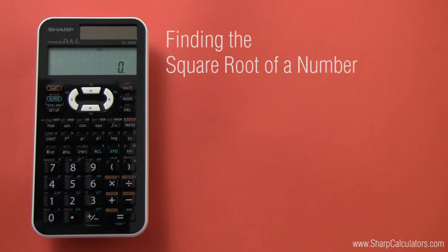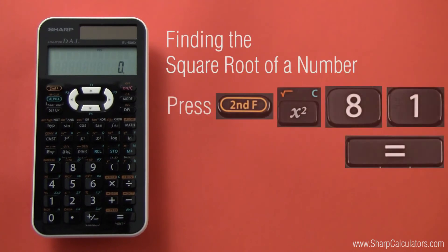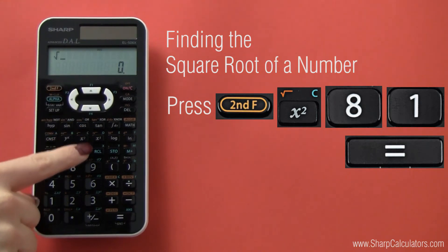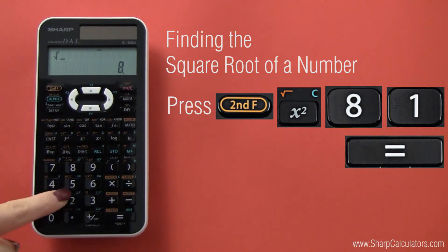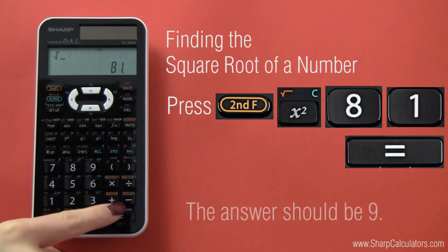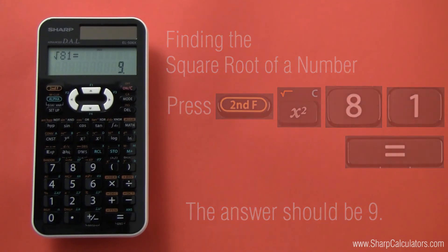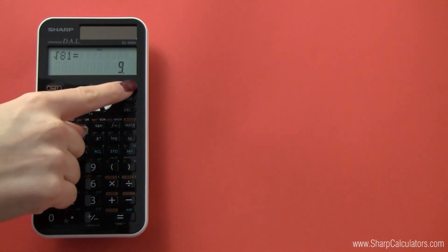To find the square root, press 2nd f, x squared, your desired number, then the equal sign. For our example, we found the square root of 81, which is 9. If you get another answer, recheck your calculator settings and entry method, and try again.